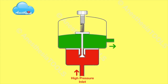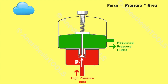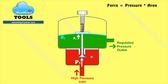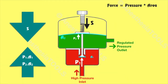We know that force equals pressure multiplied by area. The forces trying to close the valve seat are: P1, the cylinder pressure, acting on A1, the valve seat area; and P2, the regulator pressure, acting on A2, the area of the diaphragm. Both these forces are counteracted by S, the tension in the mainspring. Thus in equilibrium: S = P1 × A1 + P2 × A2.